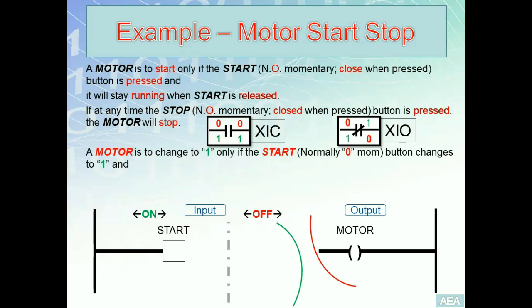The XIC (examine if closed) instruction is used when you want the output state to follow the input state — use XIC to energize an output when the input changes to one, or to de-energize an output when the input changes to zero. On the other hand, use XIO for an inverse relationship: use XIO to energize an output when the input changes to zero (open state), or to de-energize an output when the input goes to the closed state (one).